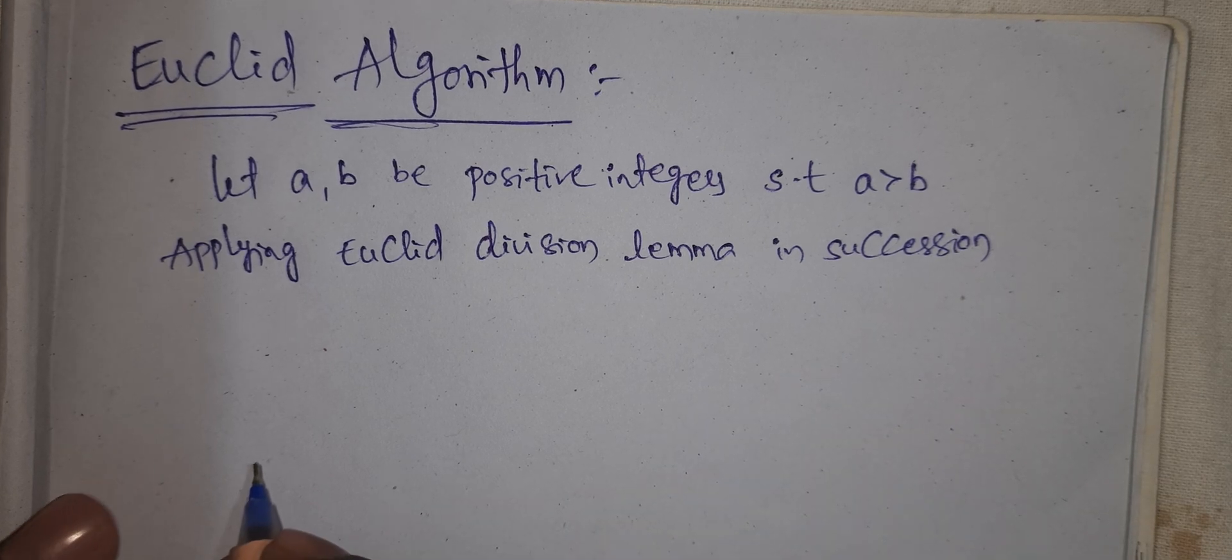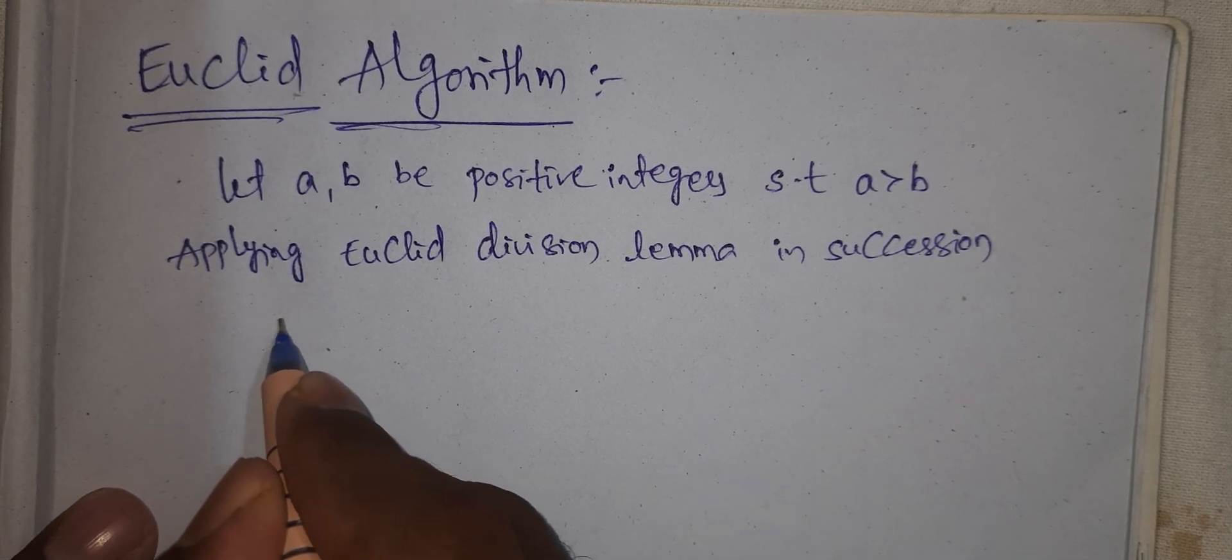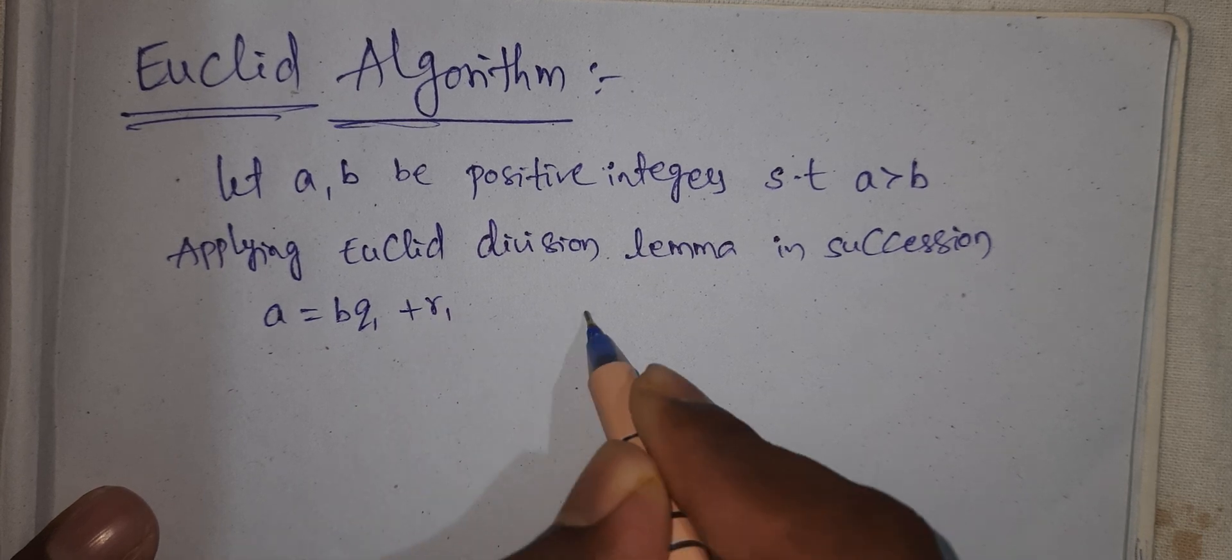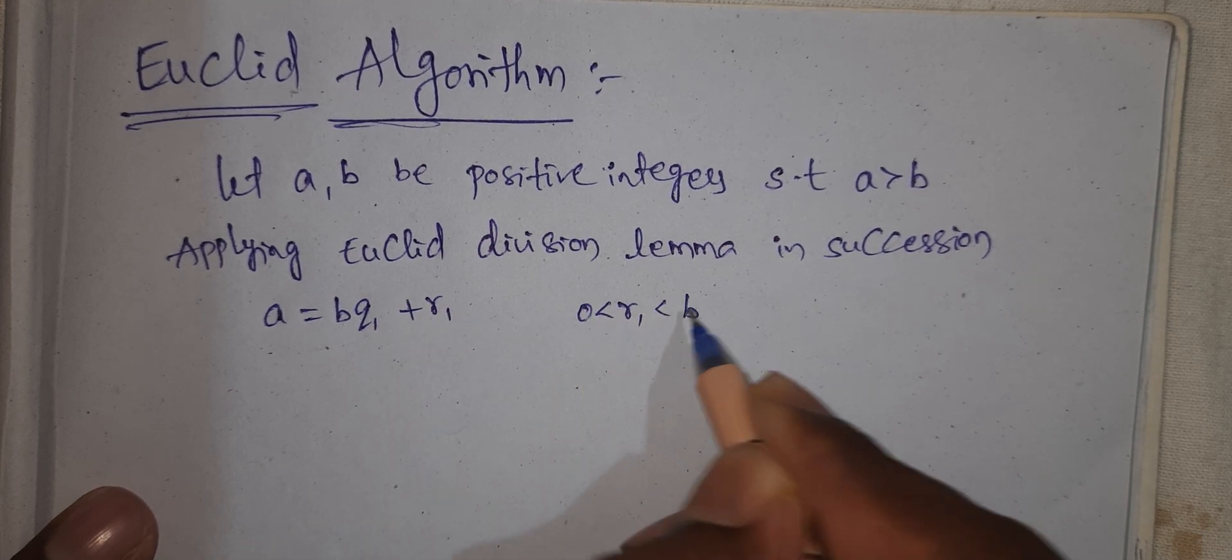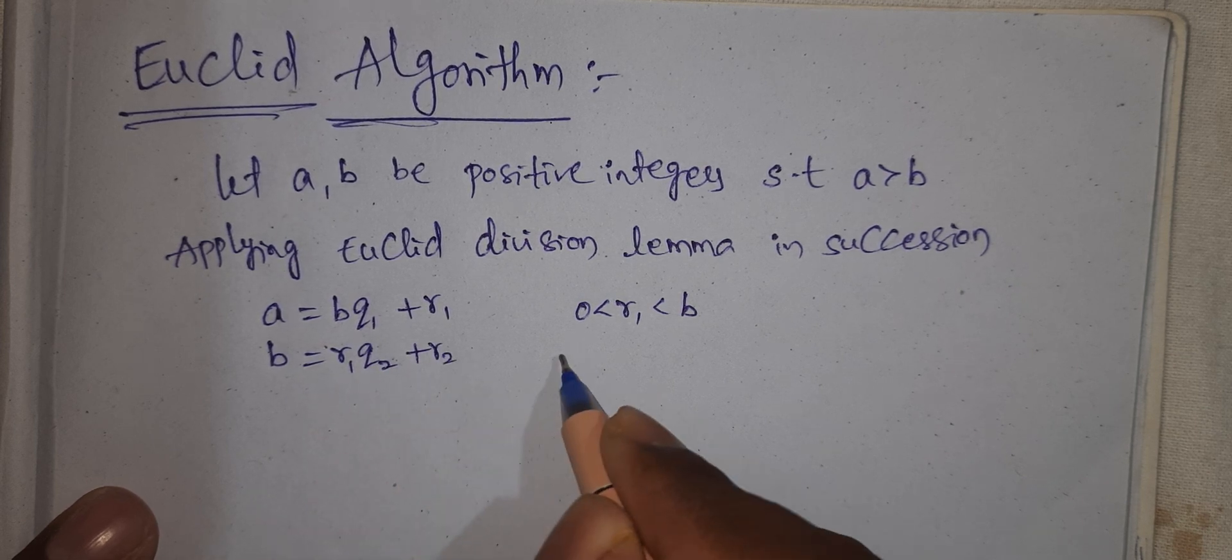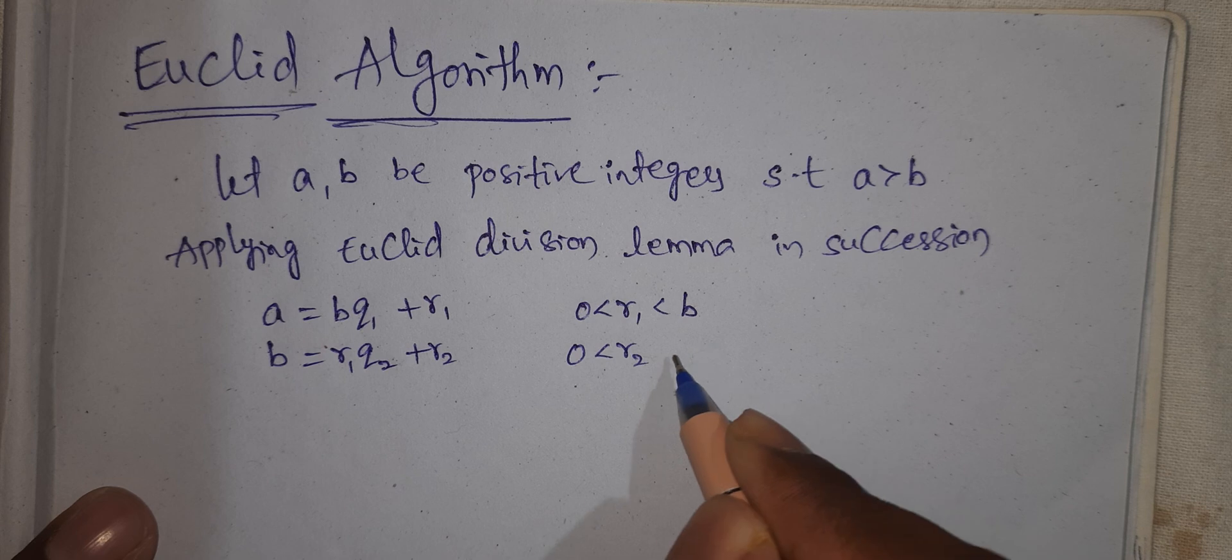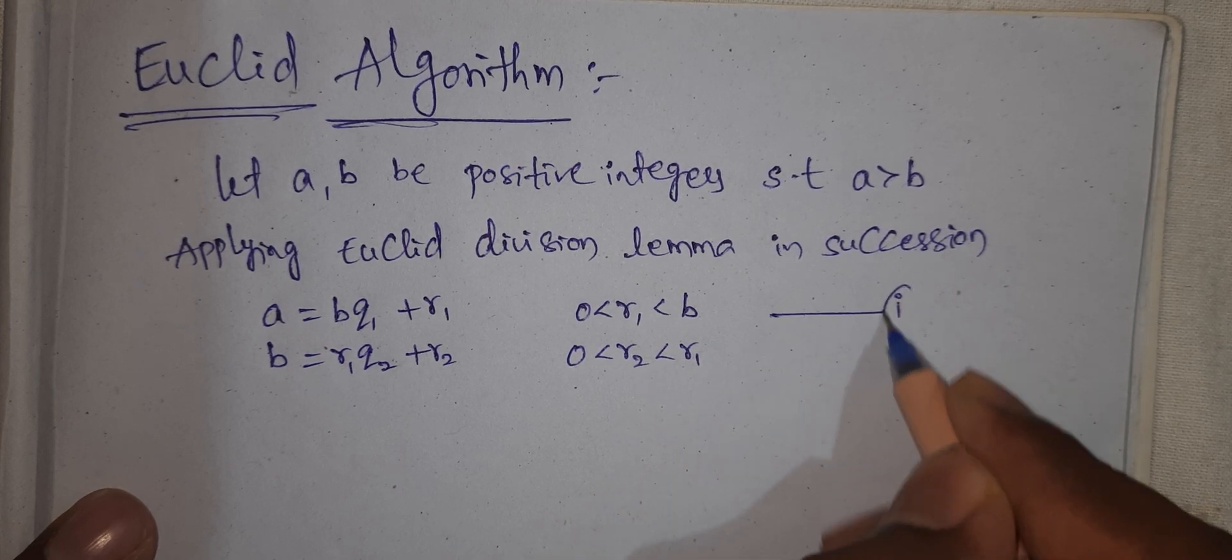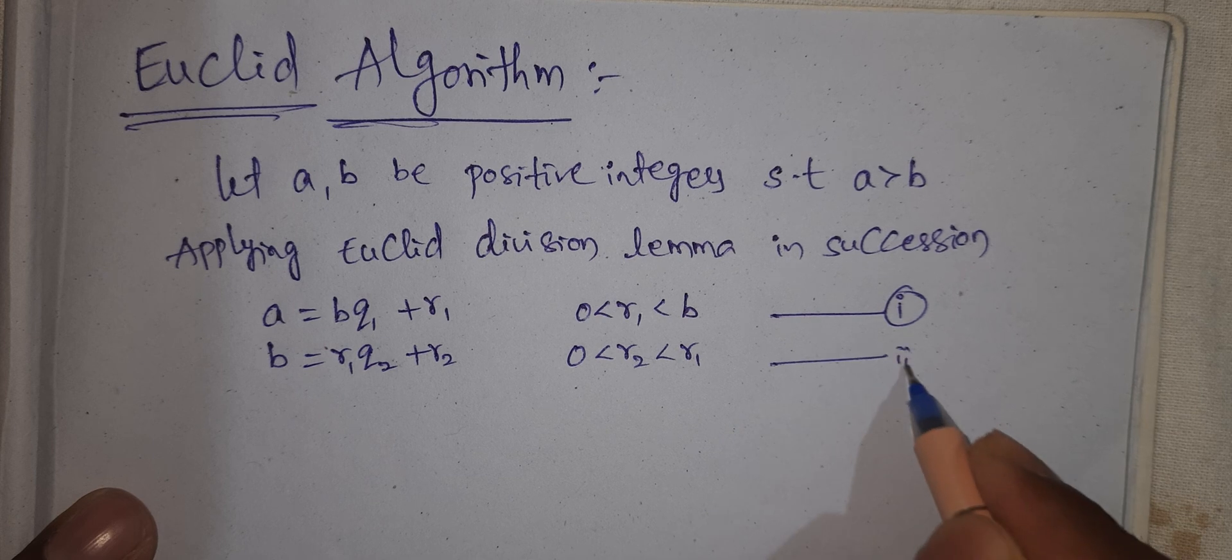A equal to BQ1 plus R1, this is 0 less than R1 less than B. B equal to R1 Q2 plus R2, 0 less than R2 less than R1. This is equation number 1, roman number 2.